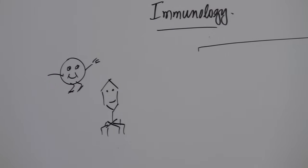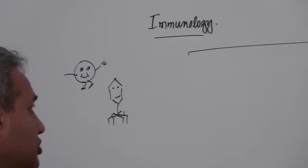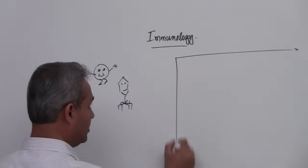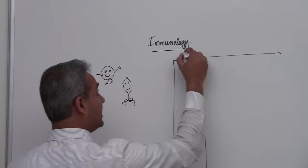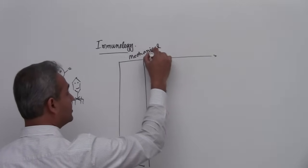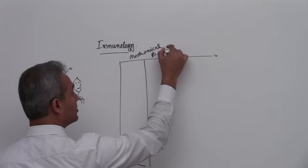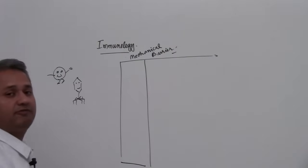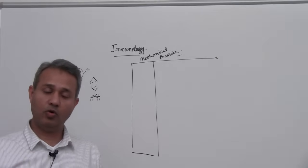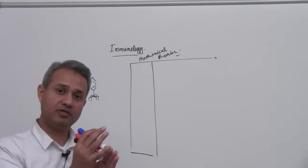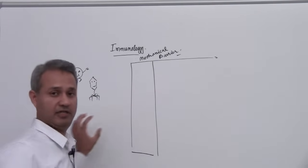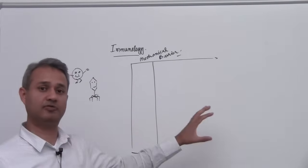So the very first function of the immune system is to actually offer mechanical barrier. So that is the very first thing which happens. Our body offers mechanical barrier or it offers strong walls to the bacteria and viruses and the fungi and the other pathogens which are trying to get into us.